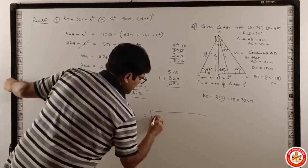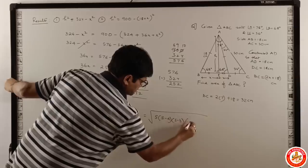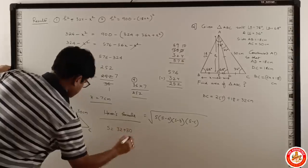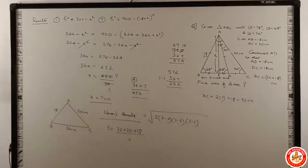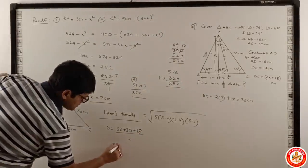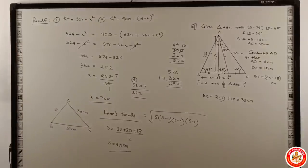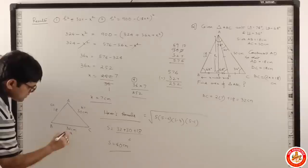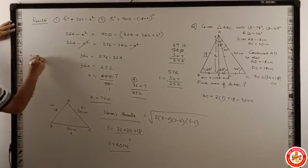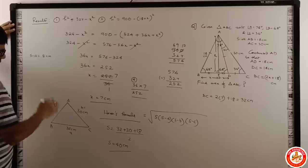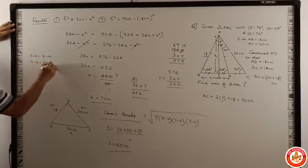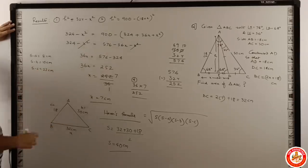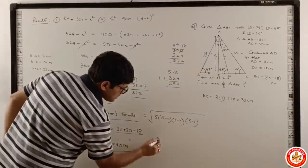The most convenient is under root of s times s minus a times s minus b times s minus c. So what is s here? S is semi-perimeter. It is 32 plus 30 plus 18 whole divided by 2. So this is 80 by 2, so s is 40. What is s minus a? s minus a is 8 centimeters. What is s minus b? It is 10 centimeters. What is s minus c? It is 22 centimeters.